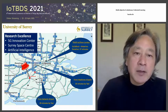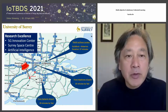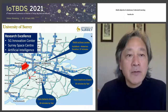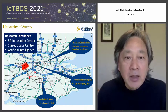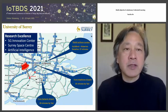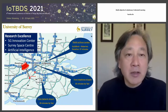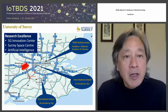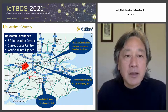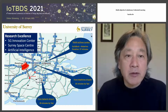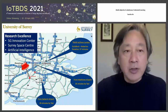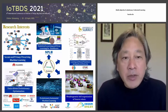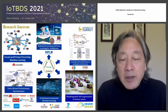Surrey has a few quite well-known research areas. One that might be most familiar to you is the 5G Innovation Centre — which has recently been renamed the 6G Centre, so they're working on the newest things. Surrey is also well known for its Space Centre, which is very well known worldwide, as well as research in artificial intelligence.